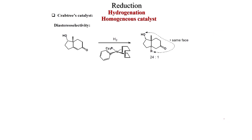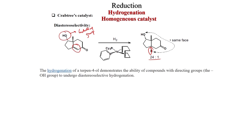Diastereoselective reduction is also possible with Crabtree's catalyst. Here, a hydroxy group is important for directing. In a bicyclic compound with an enone, hydrogen adds to the double bond and facial selectivity is controlled by the hydroxy group — the hydroxy is the controlling group. You get a 24:1 diastereomeric ratio. The hydride comes from the same face as the hydroxy group — both down — so hydroxy-directed hydrogenation occurs.